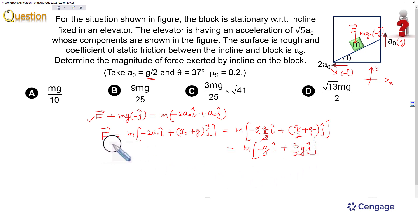We are interested to calculate the magnitude of this contact force. The magnitude of F should be equal to √(g² + (3g/2)²) × m, which equals √13mg/2. So the option should be correct, this one, option D should be correct. This is the correct option.